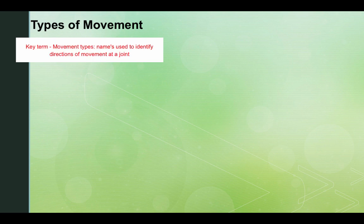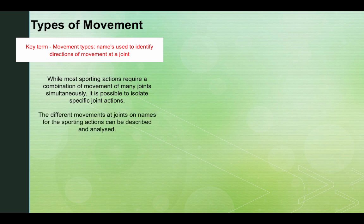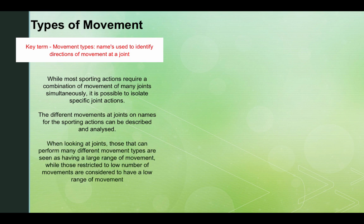Key term — movement type: the name used to identify direction of a movement at a joint. While most sporting actions require a combination of movement of many joints simultaneously, it is possible to isolate specific joint actions. The different movements at a joint can be described and analysed. When looking at joints, those that can perform many different movement types are seen to have a large range of movement, while those restricted to a low number of movements are considered to have a low range of movement.